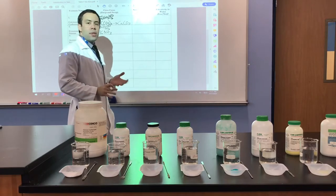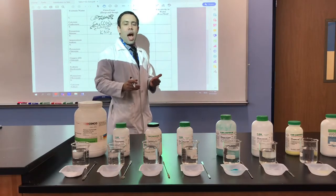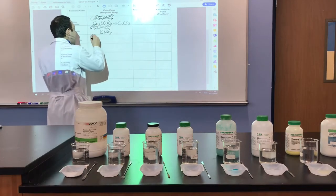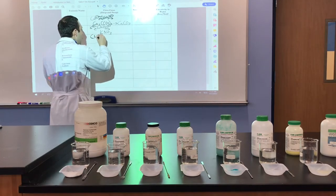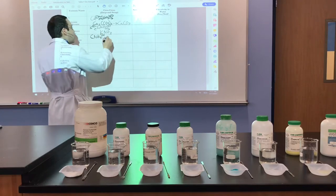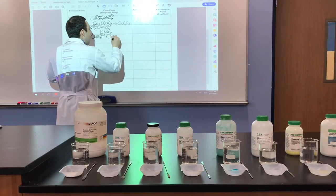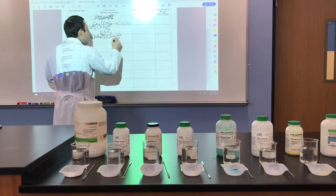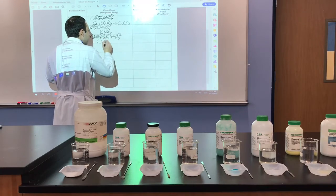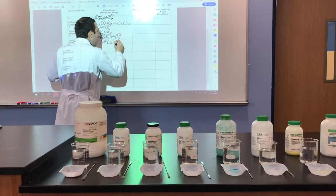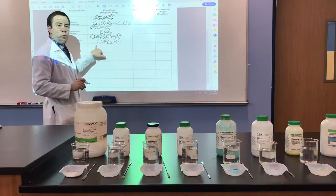For ammonium sulfate, both of these ions are polyatomic ions on Table E. Ammonium is NH4, 1 plus, and sulfate is SO4, 2 minus. When you perform the criss-cross method, you get (NH4)2SO4 — ammonium sulfate.